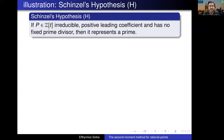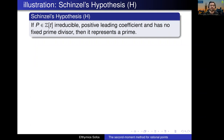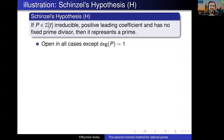Let me give a simple example of the second moment method. Recall Schinzel's hypothesis — I'll only state the version already known by Bunyakovsky. It states that if you give me an irreducible polynomial in one variable with positive leading coefficient, and you assume there is no periodic obstruction — in particular, no fixed prime divisor — then it represents infinitely many primes. Equivalently, it represents at least one prime. This is a very hard problem — the only known case is when you have a degree-one polynomial, which is Dirichlet's theorem on progressions.